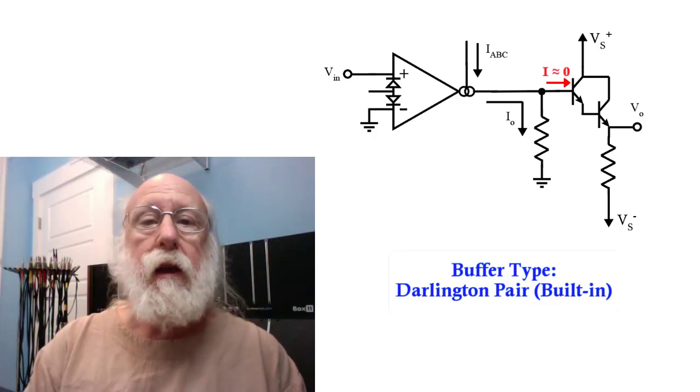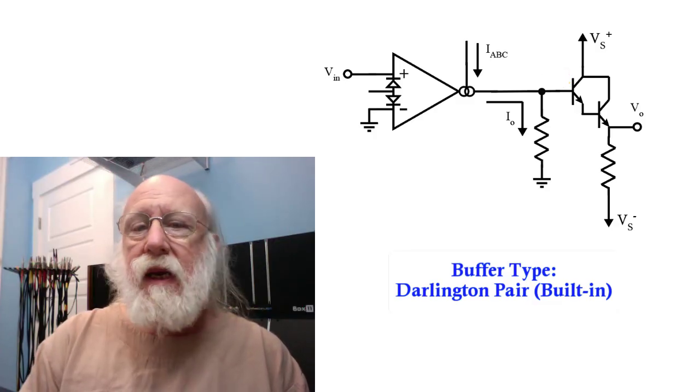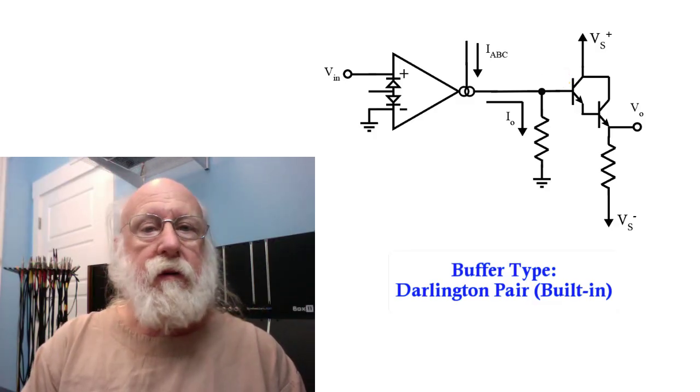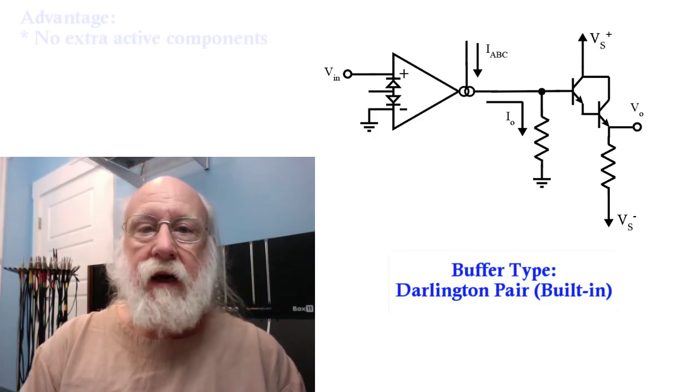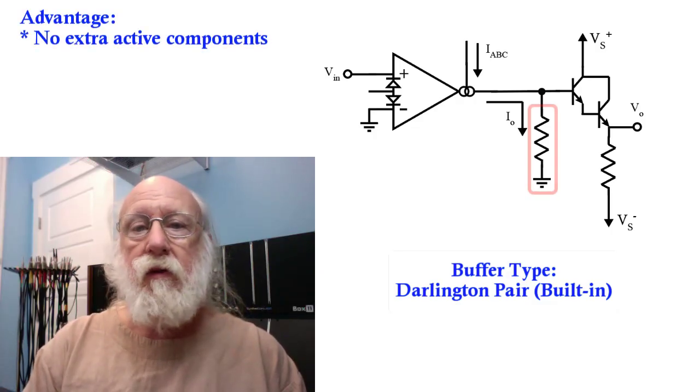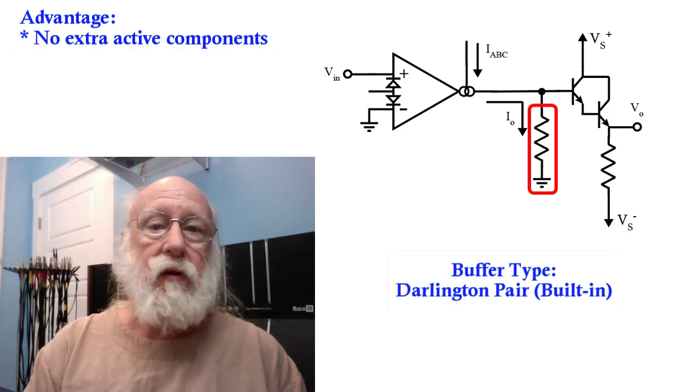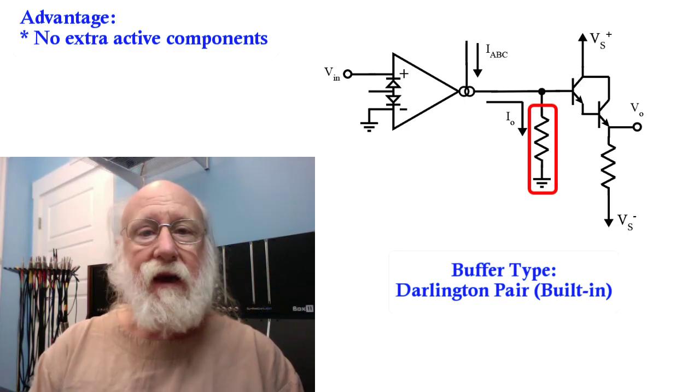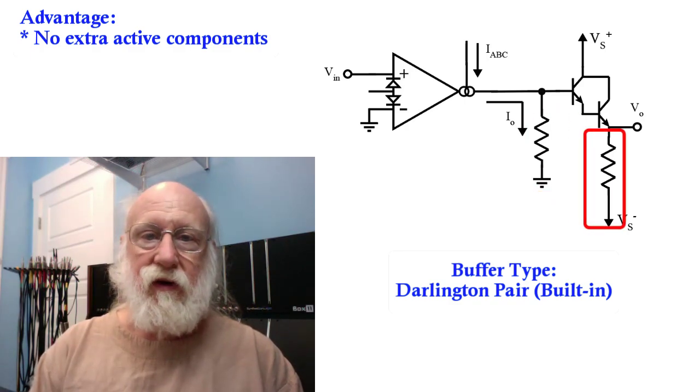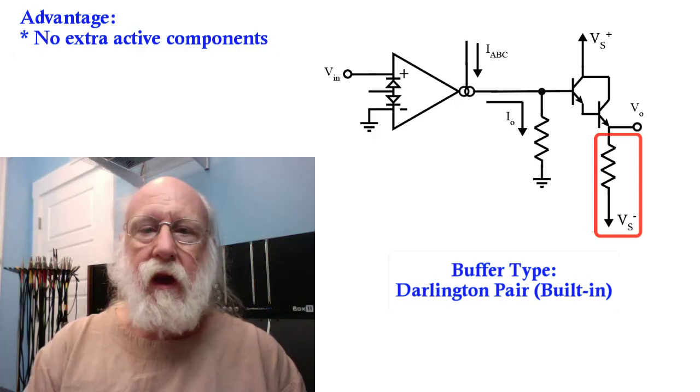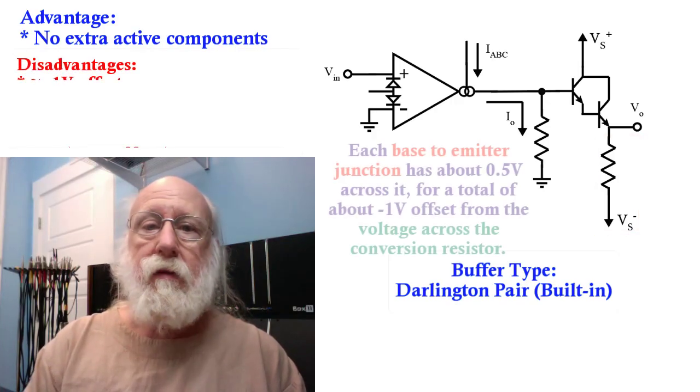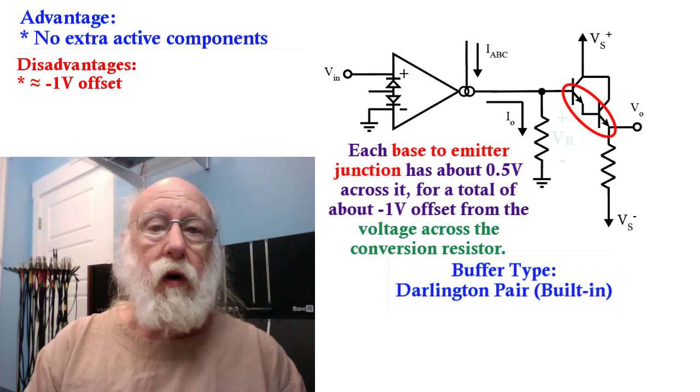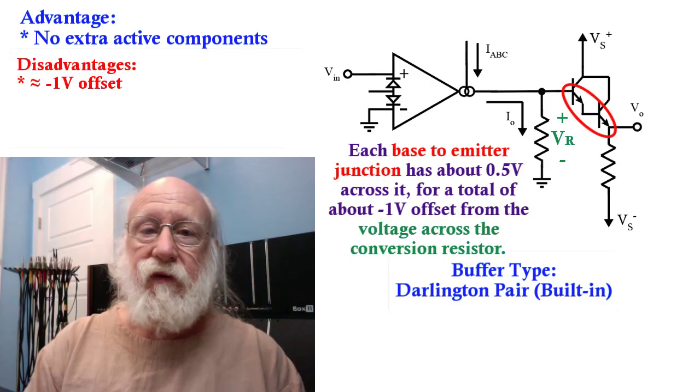The main advantage of using the Darlington pair is that it's built into the chip. You don't have to add an extra component other than the resistor that does the actual current to voltage conversion, and you have to add the resistor that connects to the emitter. The disadvantages are that it does add about a negative one volt offset to your output voltage.